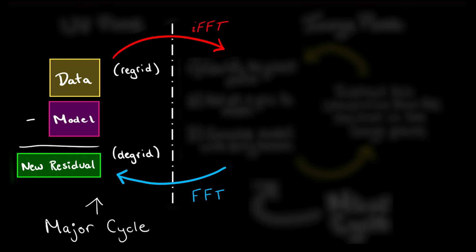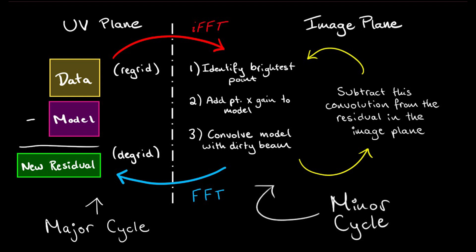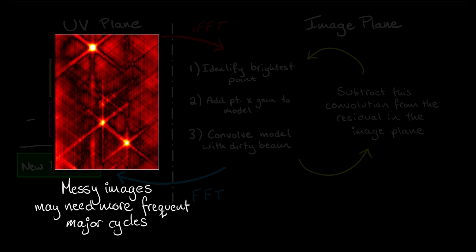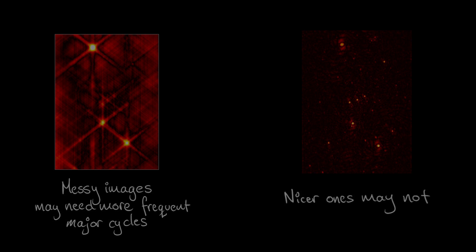The larger the ratio of major to minor cycles, the more accurate our final model is, but the more expensive the computation. A balance needs to be struck that optimizes computational time versus ultimate accuracy. Complex images with messy dirty beams often need more frequent major cycles, while simpler images with relatively simple dirty beams can get away with fewer.